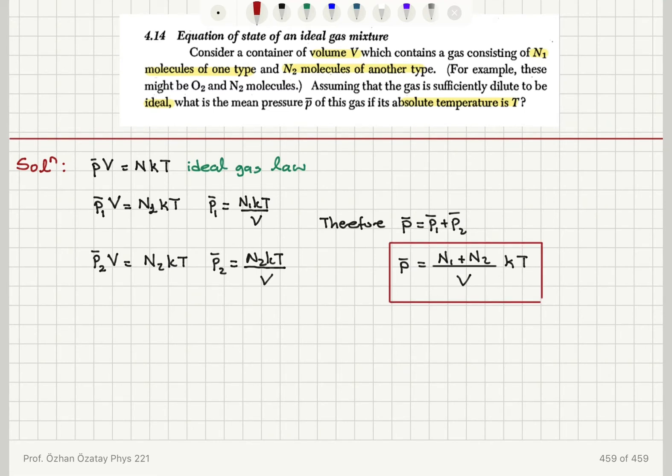It's also suggested in the problem that these two could be oxygen and nitrogen molecules. We can note that oxygen and nitrogen do not interact—they make up most of the atmosphere. We can consider them to be ideal if they have sufficiently low pressure, if they are sufficiently dilute.